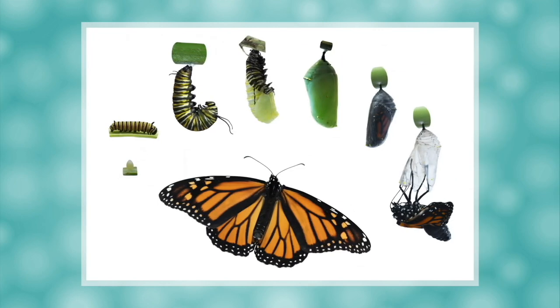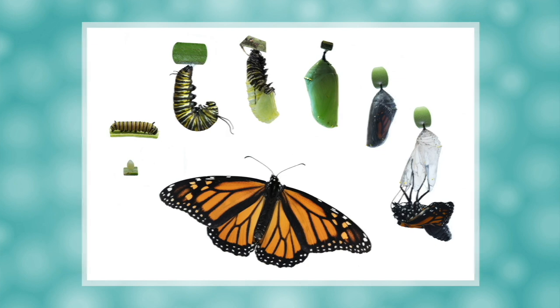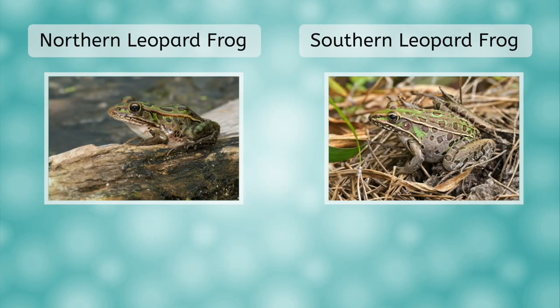Some limitations include: some organisms go through multiple life stages — for example, a caterpillar becomes a butterfly; some specimens that are found are too small to use only morphology to identify; and some species are so similar that it is almost impossible to tell them apart, for example the northern leopard frog and the southern leopard frog. What does this mean for taxonomy today? Well, today we use genetics to distinguish between different species and classify organisms.